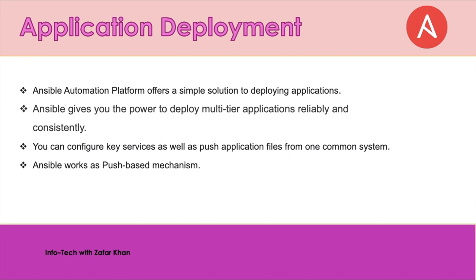Puppet and Chef are based on the pull mechanism — they are another kind of configuration management tool. Remember: Puppet and Chef are based on the pull mechanism, whereas Ansible is based on the push mechanism. We will discuss playbooks in detail in upcoming videos — how a playbook works, how to write a playbook, and how to configure it in Ansible.